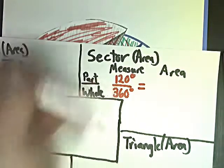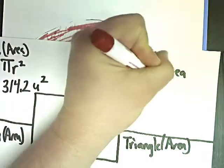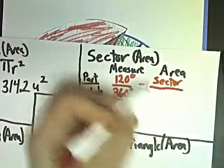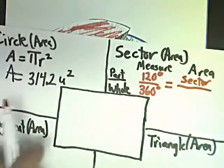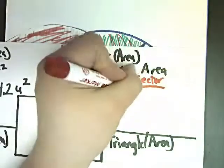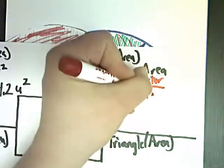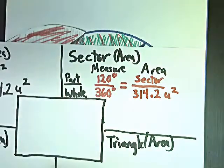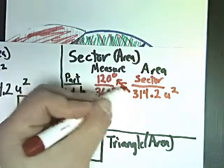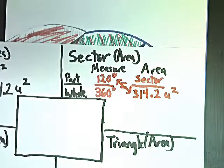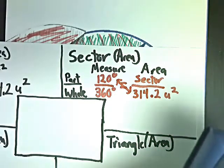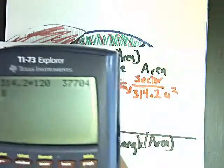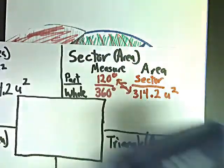Area, the part is what we're looking for, so this is sector area. The bottom part would be the circle. Well over here we found out that it's 314.2 unit squared. So I'm going to do that. And if you remember from before, I just do cross multiply first. So I'm going to do 314.2 times 120, 37,704.